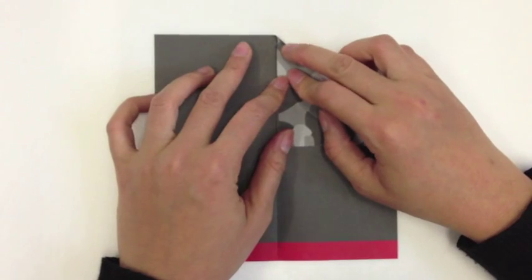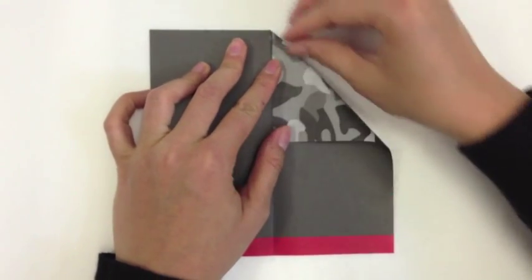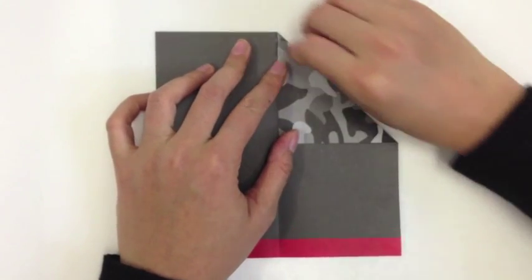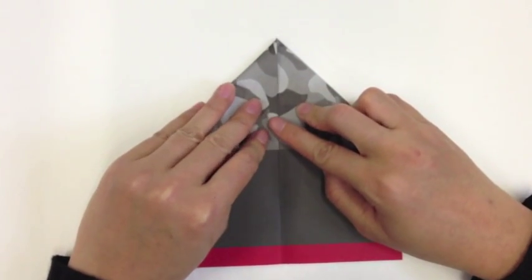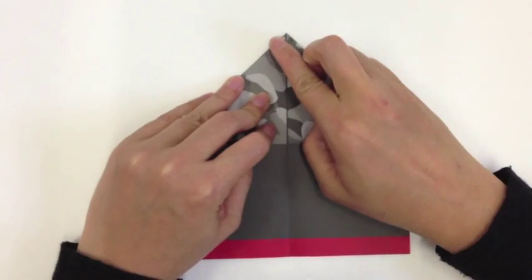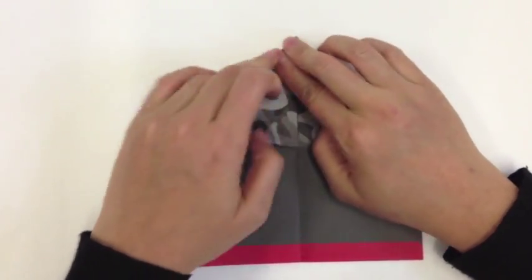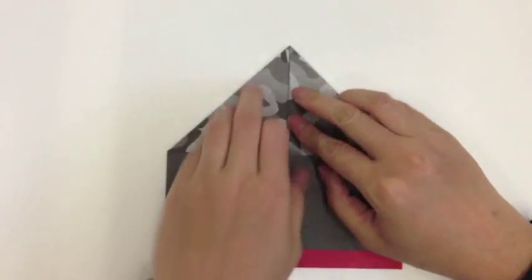One, making sure we make a nice triangle crease, and the other one toward the middle, with a nice pointy end at the top. Give it a good crease.